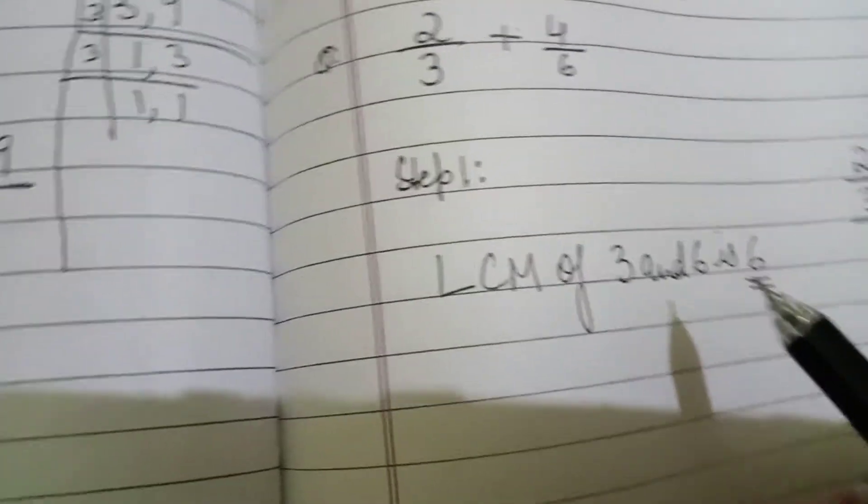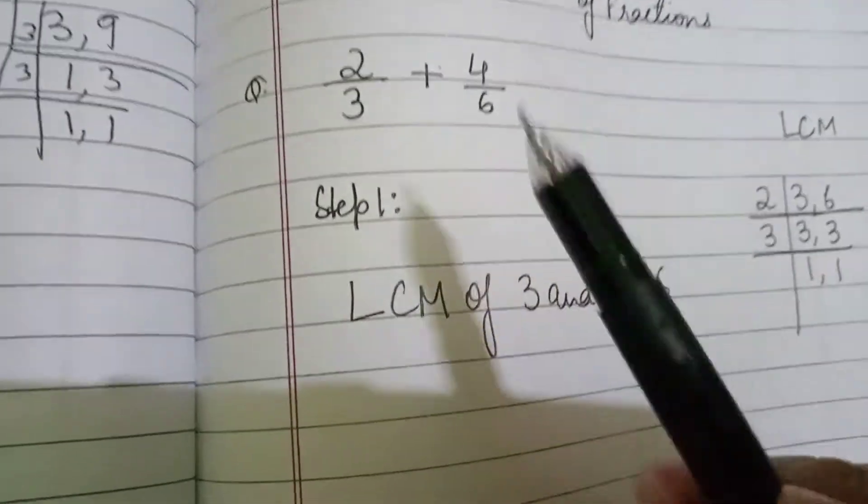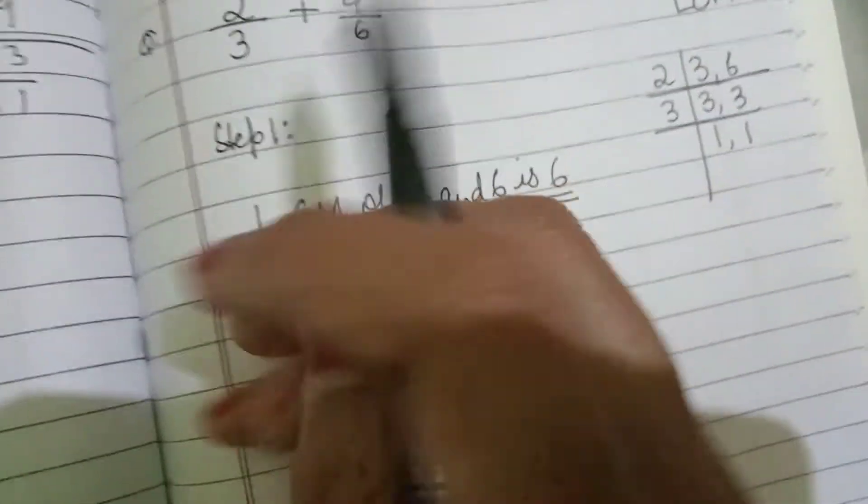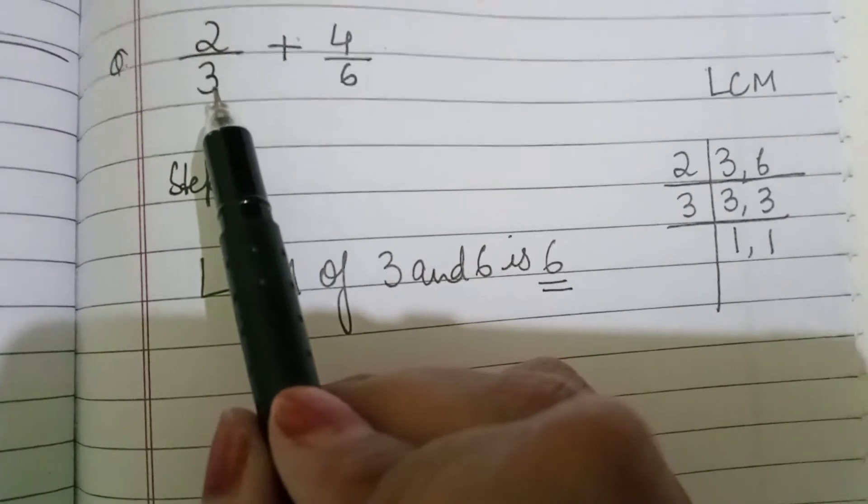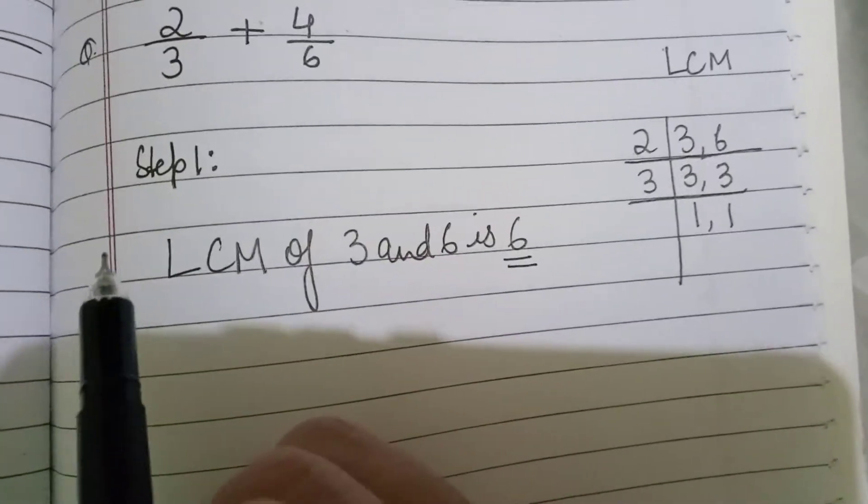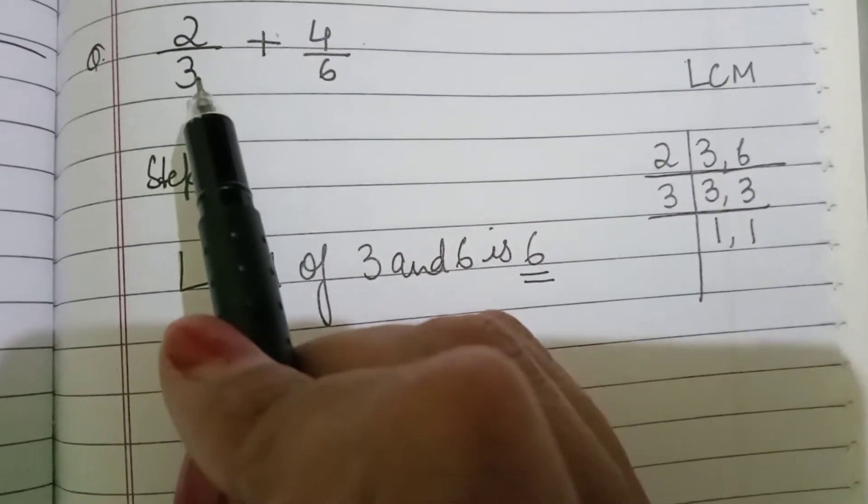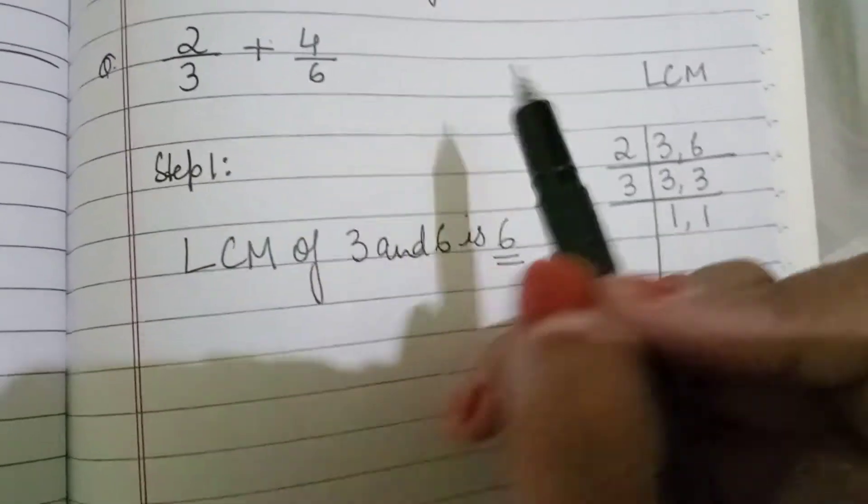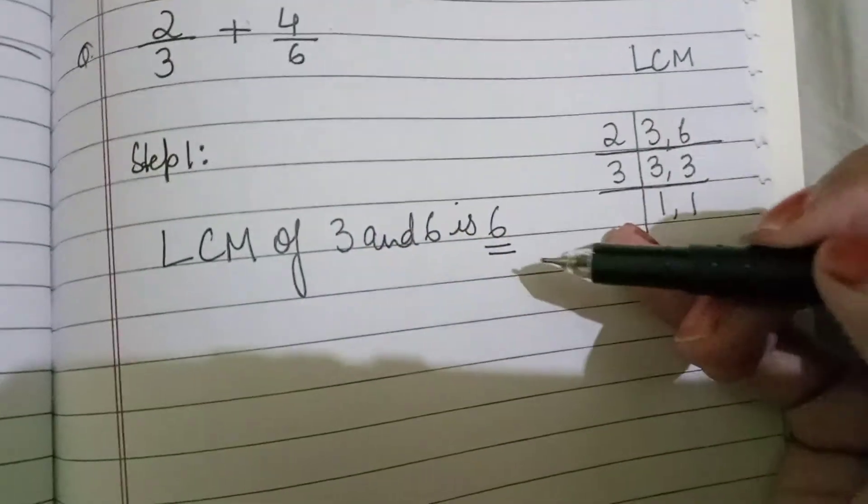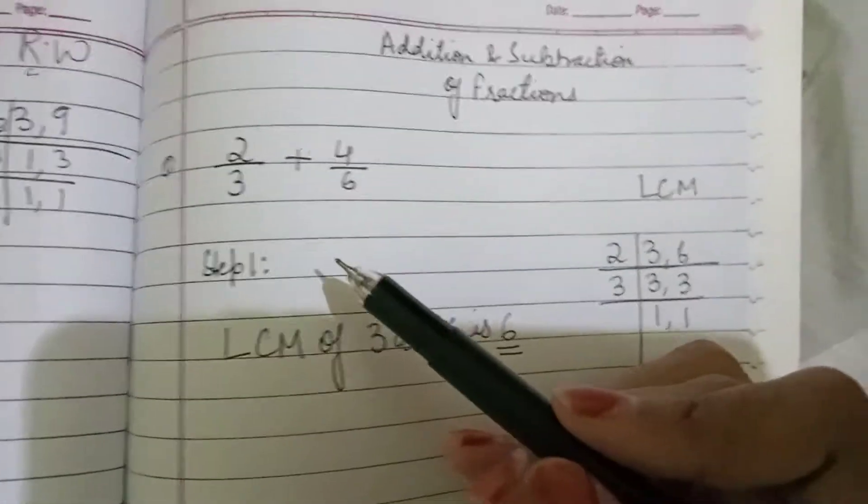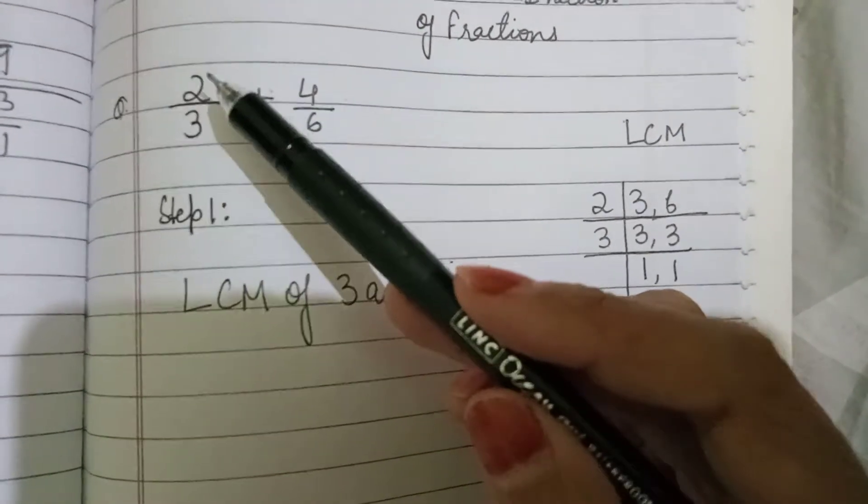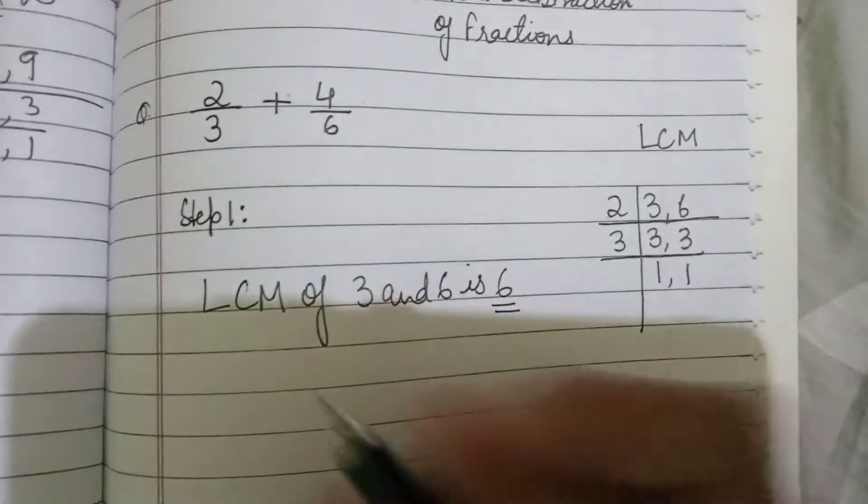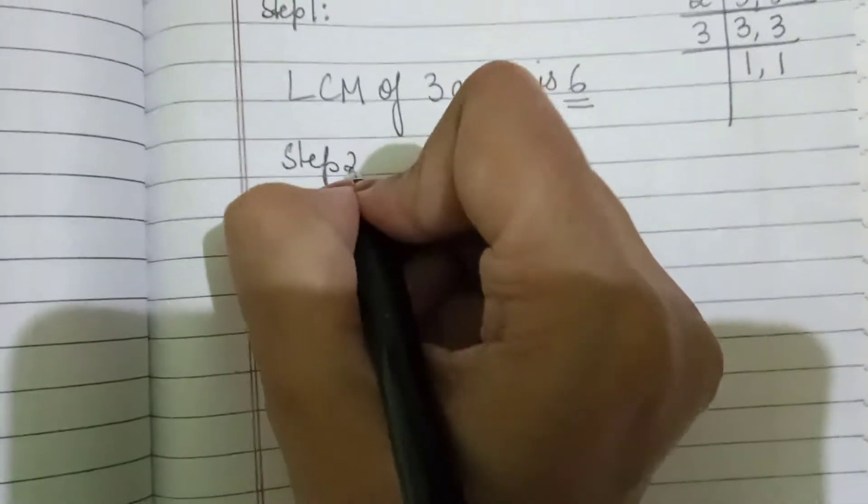Now you have got LCM as 6. Now children, very important thing. This applies to addition, subtraction and comparison of fractions. What you have to do? You have to find the number of times 3 can be multiplied to get the answer as 6. How many times will 3 be multiplied? 3 will go 2 times. So 3, 2's are 6. And how many times will 6 go? 6 will go 1 time. So if you remember equivalent fractions, in equivalent fractions, the number of times we multiply the denominator, the same number of times we will multiply the numerator also.